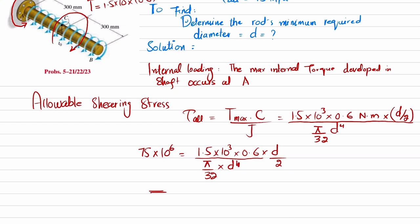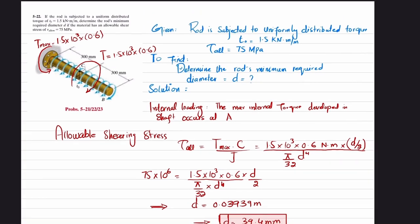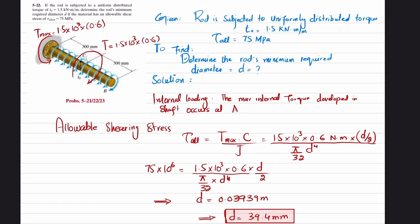Solving this equation gives d equal to 0.03939 meters, or a diameter of 39.4 millimeters. This is the required diameter of the rod needed to support the uniformly distributed torque of 1.5 kilonewton per meter with an allowable shearing stress of 75 megapascal.